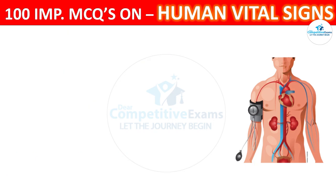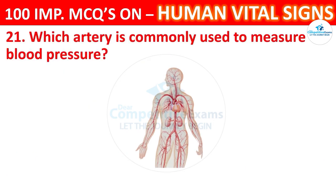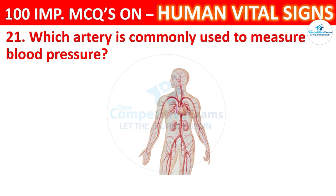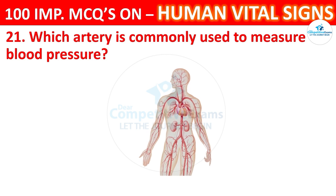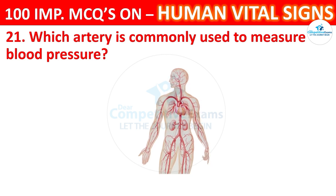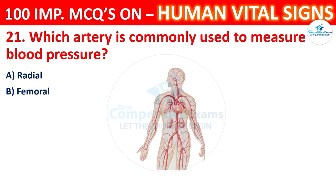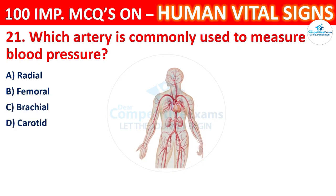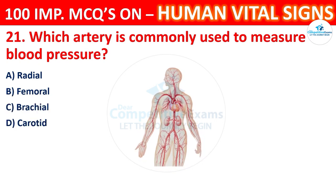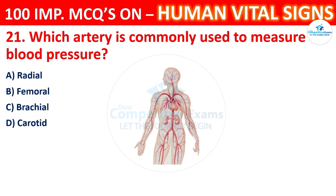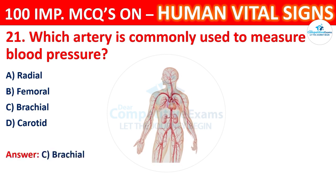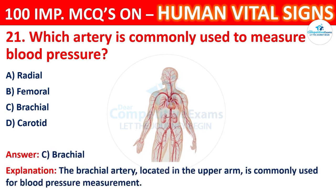Question 21: Which artery is commonly used to measure blood pressure? Options: radial, femoral, brachial, or carotid. The correct answer is C, brachial. The brachial artery, located in the upper arm, is commonly used for blood pressure measurement.